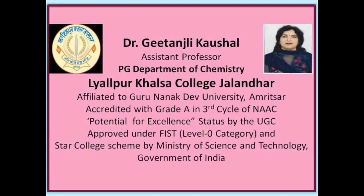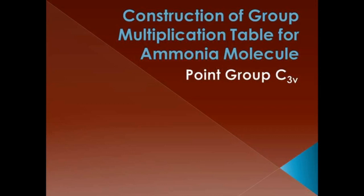Hello viewers. In a previous recording, the group multiplication table of C2V was constructed and discussed. To construct the whole group multiplication table, we have to find the product of all the binary combinations of the group. The product of the combination is obtained by actually carrying out the symmetry operations on the molecule which belongs to the point group. Now, this lecture is about the construction of the group multiplication table for the ammonia molecule.